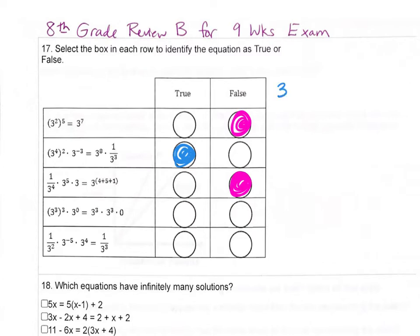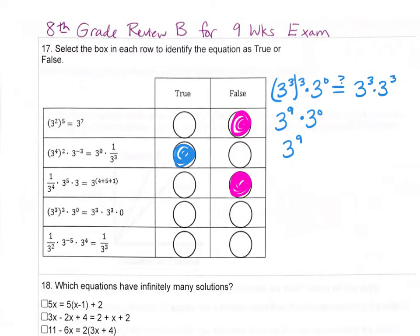Now we have 3 to the 3rd power raised to the 3rd power times 3 to the 0 power. We keep the base and multiply the exponents, then keep the base and add the exponents. 9 plus 0 is 9. We want to know if that's equal to 3 to the 3rd power times 3 to the 3rd power times 0. Anything times 0 is 0, so those are not equal. This is false.